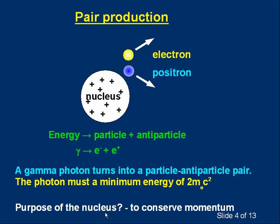Students usually ask at this point: what is the purpose of the nucleus? All I'll say for now is you need the nucleus to conserve momentum. If that doesn't satisfy you, there is a more detailed explanation at the very end of the video. In your textbook you'll probably see a diagram showing the gamma photon before and the electron-positron pair after, near a nucleus — that would be a typical diagram showing pair production.